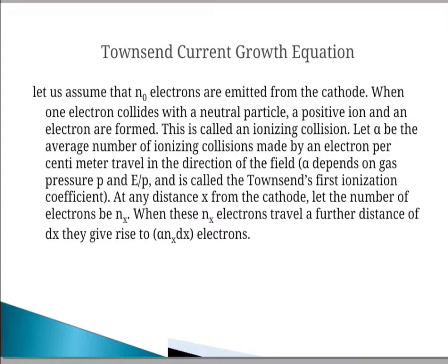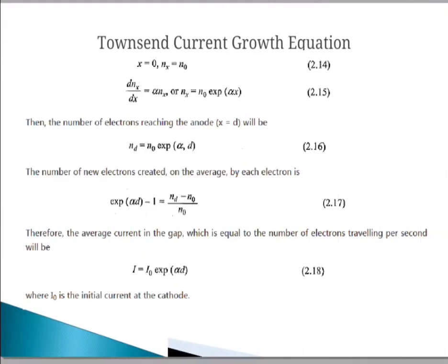At any distance x from the cathode, let the number of electrons be nx. When these nx electrons travel a further distance dx, they give rise to new electrons. At x equals 0, nx equals n0. Then d(nx)/dx equals alpha times nx, so nx equals n0 times exponential of alpha x. The number of new electrons created on average by each electron is exponential of alpha d minus 1, which equals (nd minus n0) divided by n0.